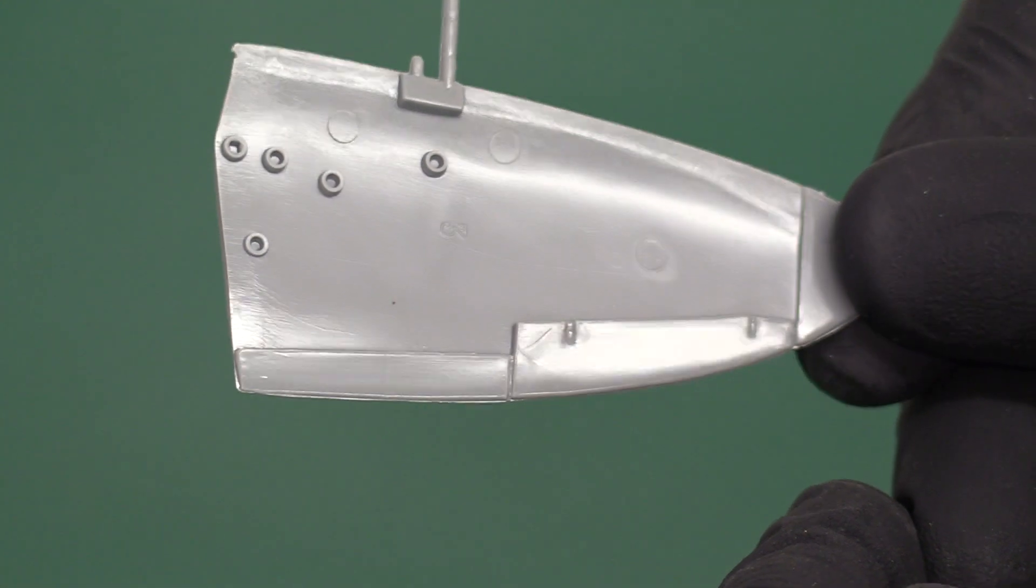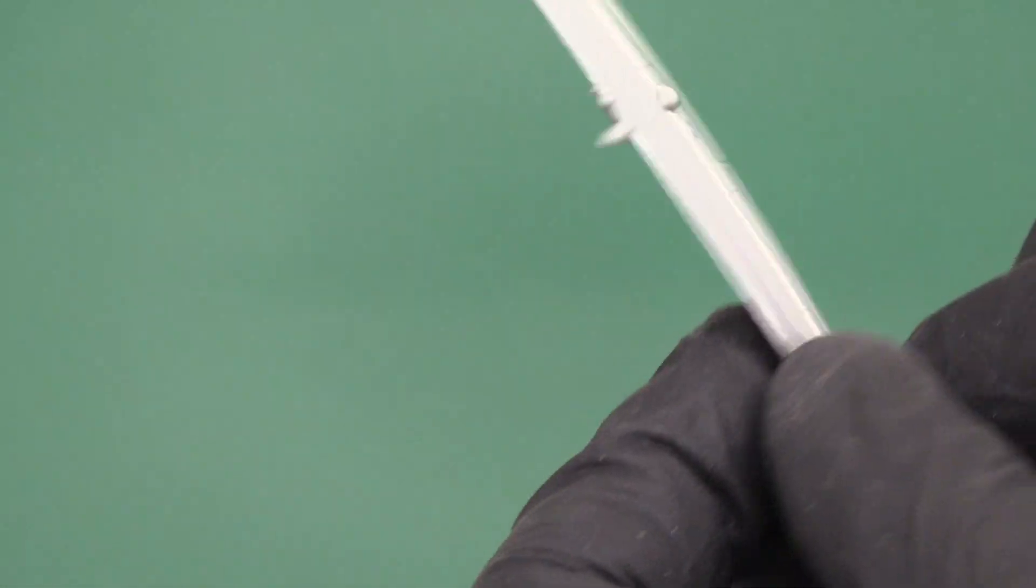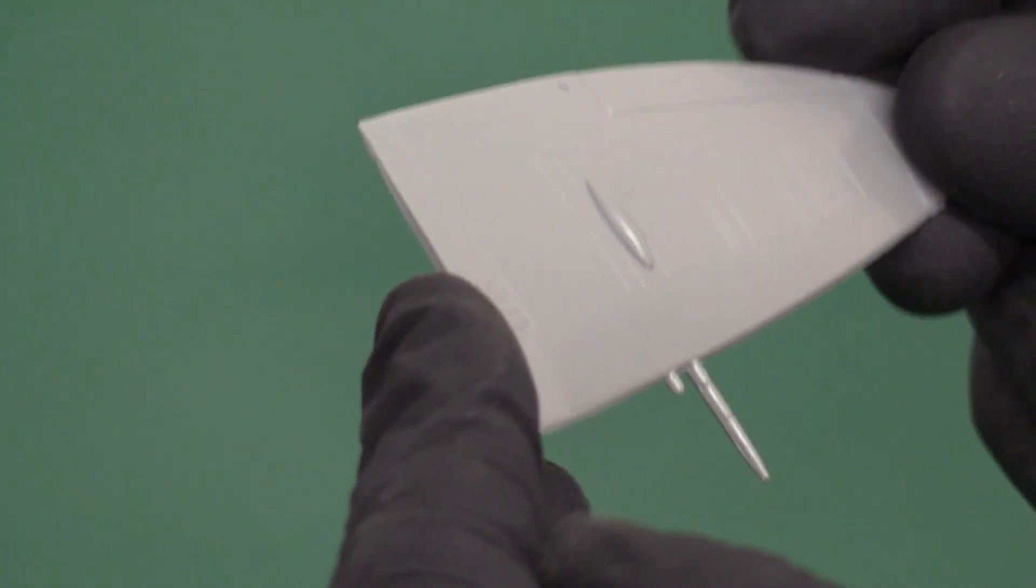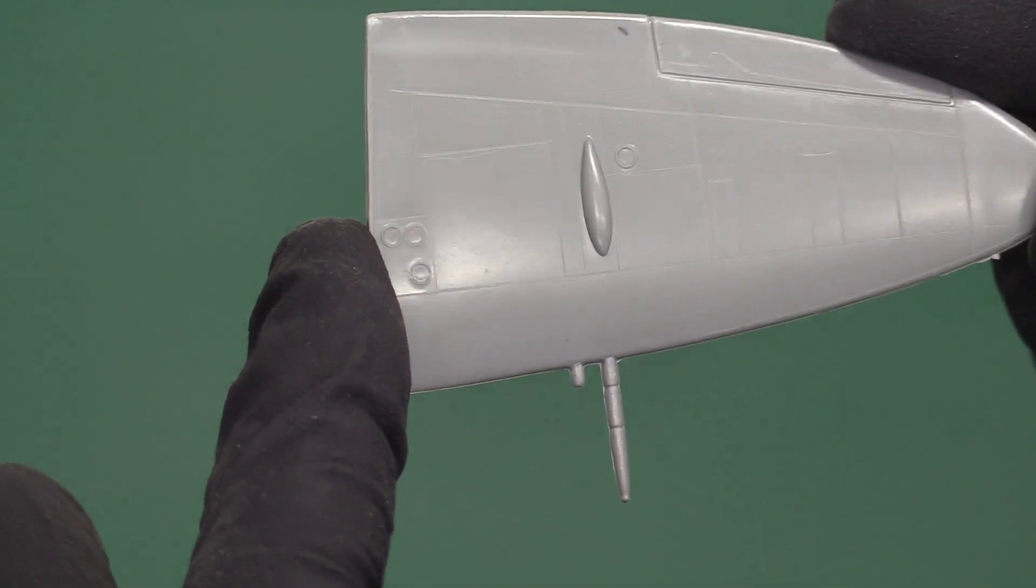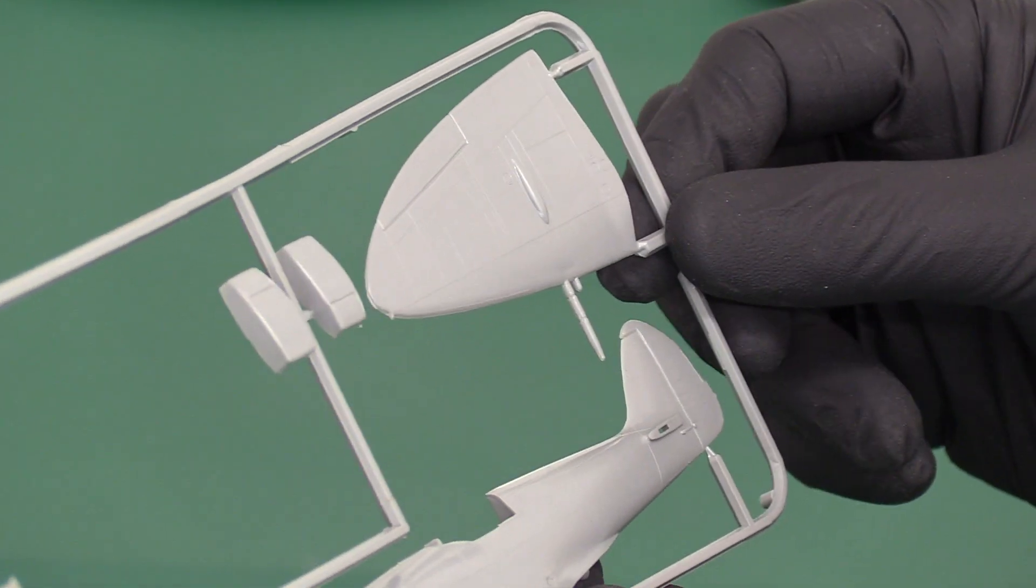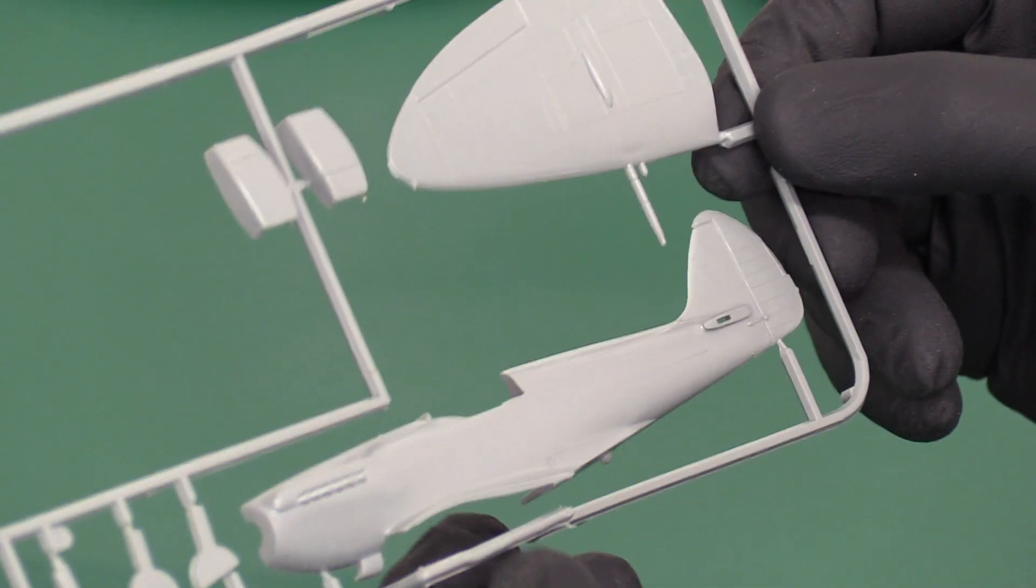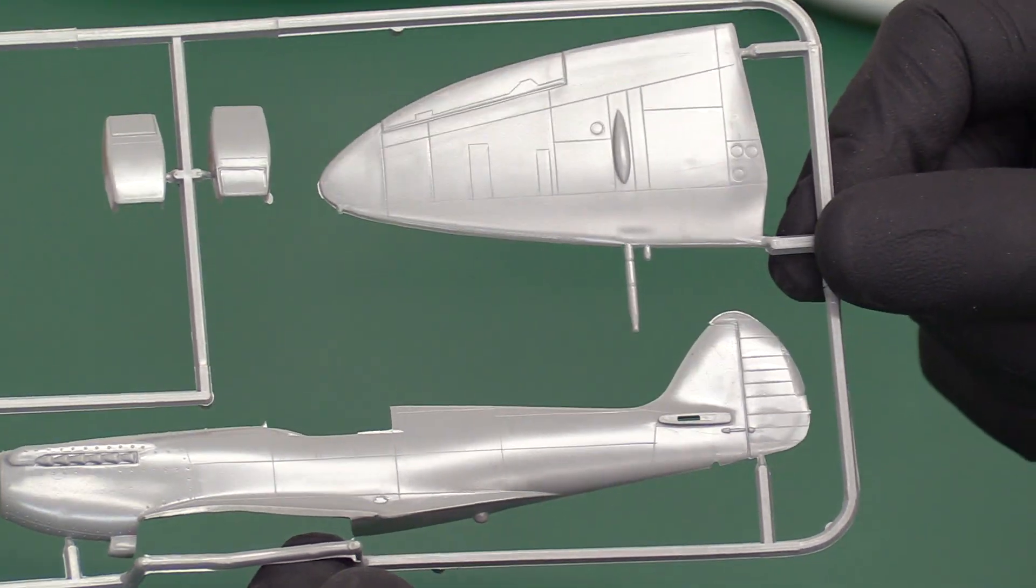They've done this quite nicely, haven't they? You can see they've got the flaps and the ailerons there separately. Then you've got your Hispano cannons which actually look a little bit out of scale. Seems a bit too chunky to me for this scale. I think they might be a bit too long as well. So they're not quite right, but we won't be too churlish about it.